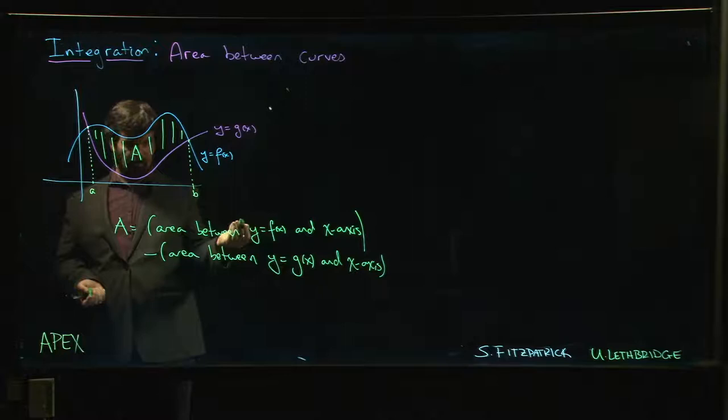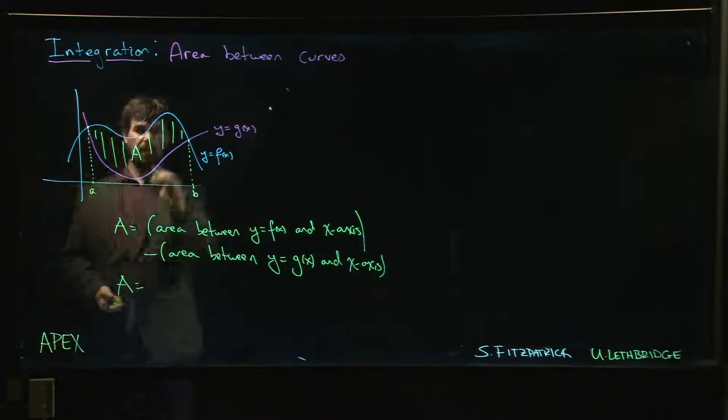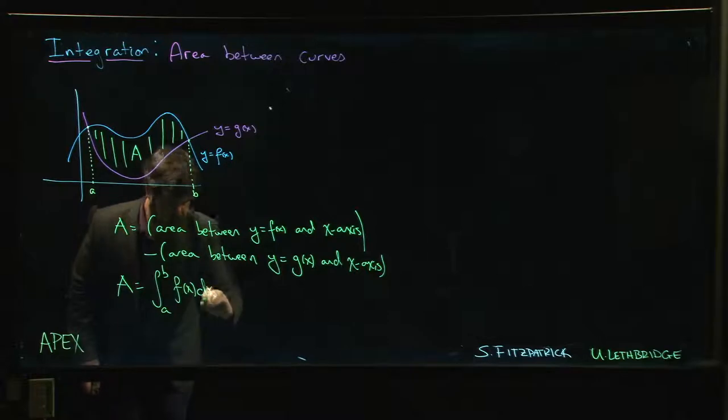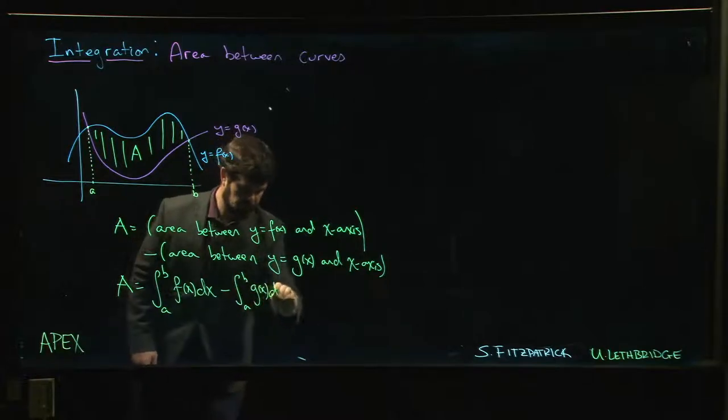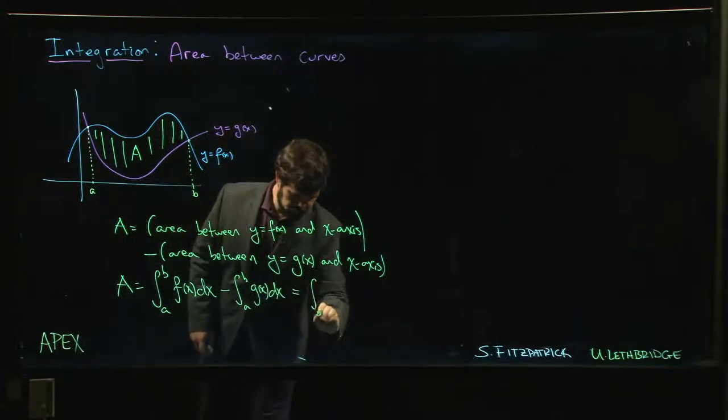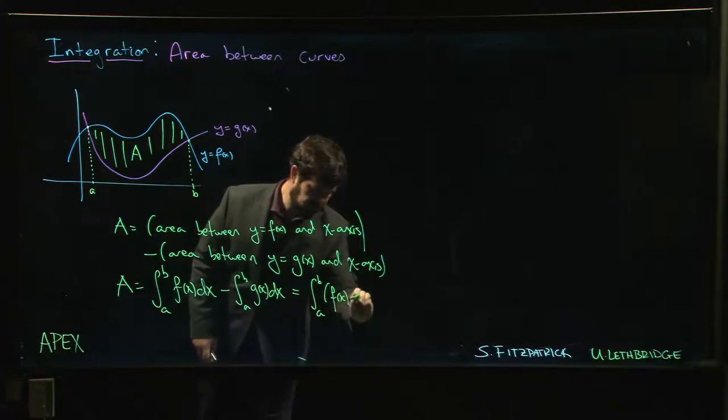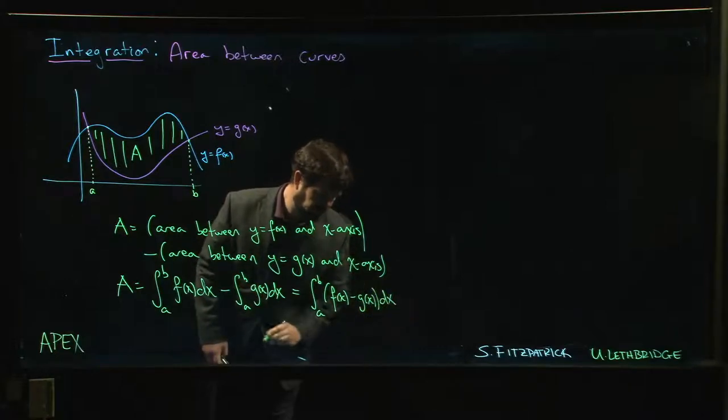So that means this area is just the integral from a to b of f of x minus the integral from a to b of g of x. Or if you like, you can even combine this as a single integral: f of x minus g of x.